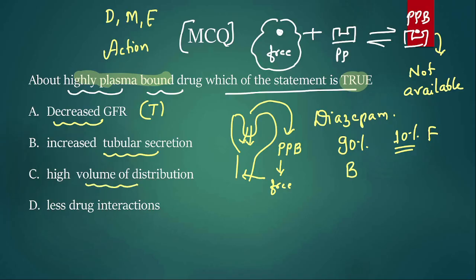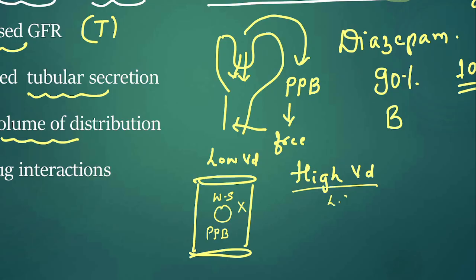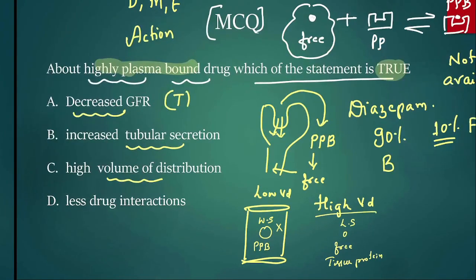Regarding volume of distribution (Vd): if a drug stays in the blood vessel, it has low Vd; if it distributes widely into tissues, it has high Vd. Factors keeping a drug in the blood vessel include water solubility, large size, and plasma protein binding. Factors giving high Vd include lipid solubility, small size, being free drug, and tissue protein binding. Since a plasma protein-bound drug stays in the blood vessel, it has low Vd — not high Vd. So that option is ruled out.